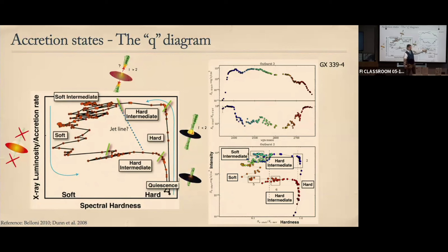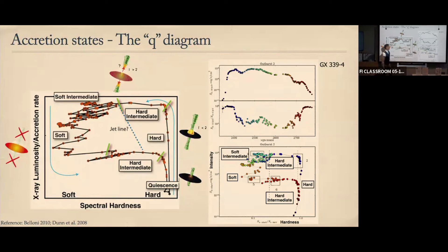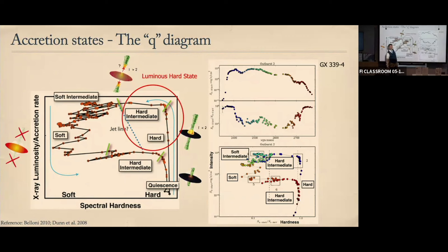The system might bounce around in the soft state and occasionally go back to the hard side. Later in the outburst, the luminosity starts to drop on the soft side, and then at a very particular luminosity it switches back to the hard state and eventually fades out. In my talk, the 'luminous hard state' refers to the hard part of the diagram at high brightness — what are sometimes called the hard intermediate state, and even the upper part of the ordinary hard state.